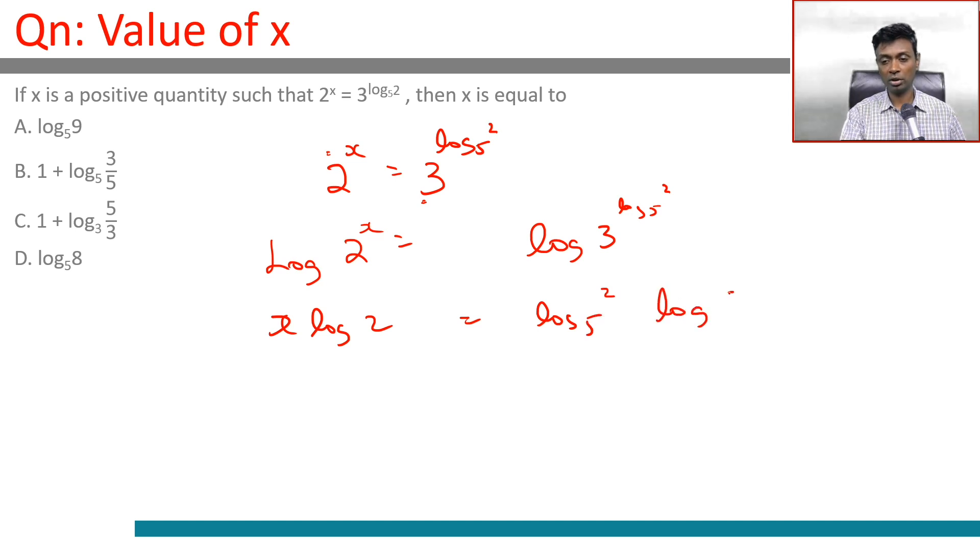We can choose any base and this rule will work. I'm going to choose the base as 3. Why? Because log_3(3) is 1. So x times log_3(2) is log_5(2).